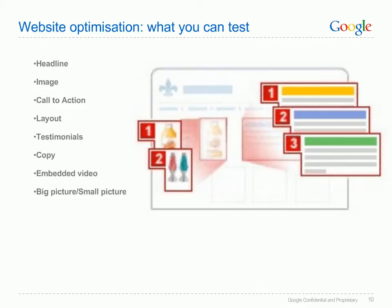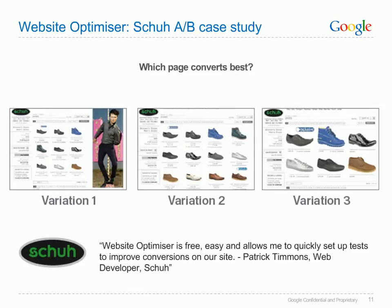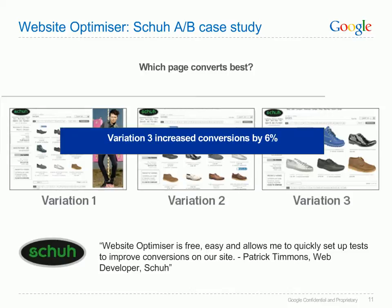We'll now look at some real-life companies who have seen big wins from testing and implementing changes on their site. Here is an A/B test example from Shoe. Shoe set up an A/B test in Website Optimizer to find out which product layout provided the highest conversion rate. It took little over a week before Website Optimizer showed that Variation 3 was a clear winner — it increased the number of products added to shopping baskets by 10%, and led to an incredible 6% increase in conversions for visitors browsing in that product category.